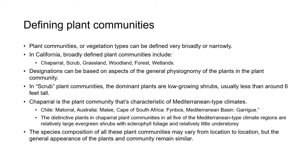With the exception of wetlands, these designations are based on aspects of the general physiognomy of the plants in the plant community. Physiognomy refers to the general appearance of the dominant plants in the community. Grassland, woodland, and forest are probably self-explanatory. In scrub plant communities, the dominant plants are low-growing shrubs that usually grow to less than around six feet tall. The word scrub is derived from an Old English or Northern European word for shrub.